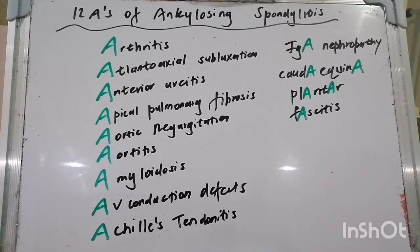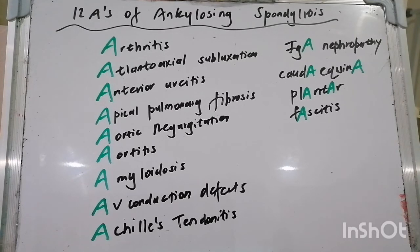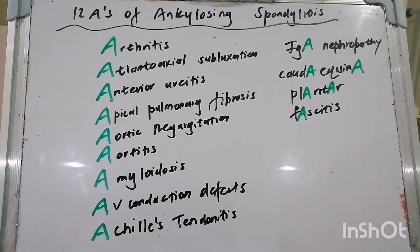How would you manage someone with ankylosing spondylitis? First, encourage exercise, particularly physical therapy to preserve back extension; consider physiotherapy referral. Non-selective or COX-2 inhibitors (NSAIDs) are used first-line. For many patients, this is the only treatment ever required. Other analgesia are not as effective as NSAIDs, but can be considered for residual pain despite continuous maximum NSAID treatment. Sulfasalazine has some evidence in peripheral arthritis associated with ankylosing spondylitis, but there is no evidence for methotrexate in axial spine disease — methotrexate has shown no benefit either as monotherapy or in combination with other DMARDs.